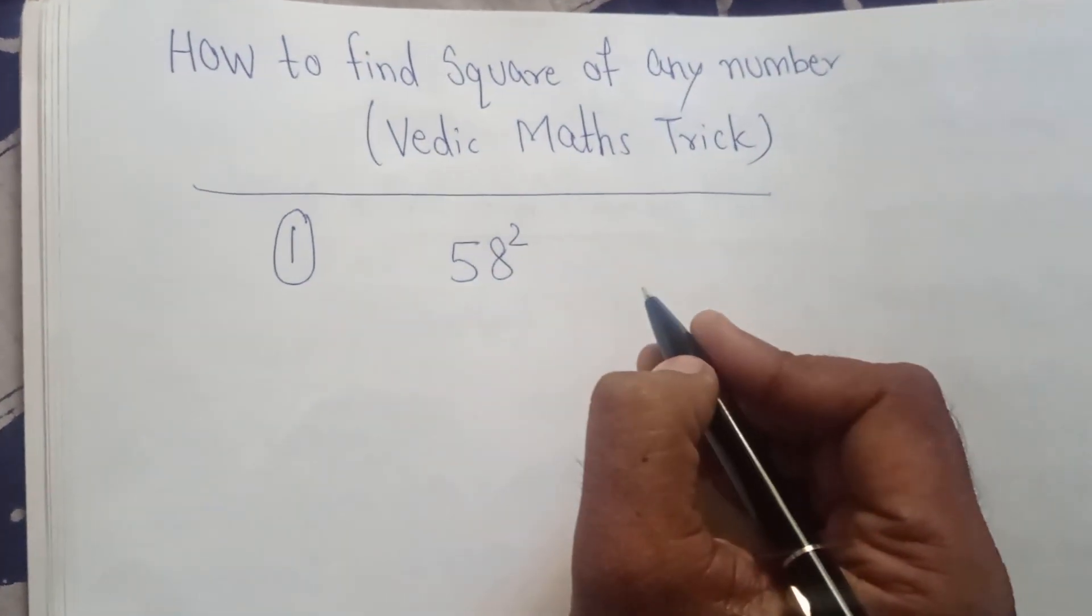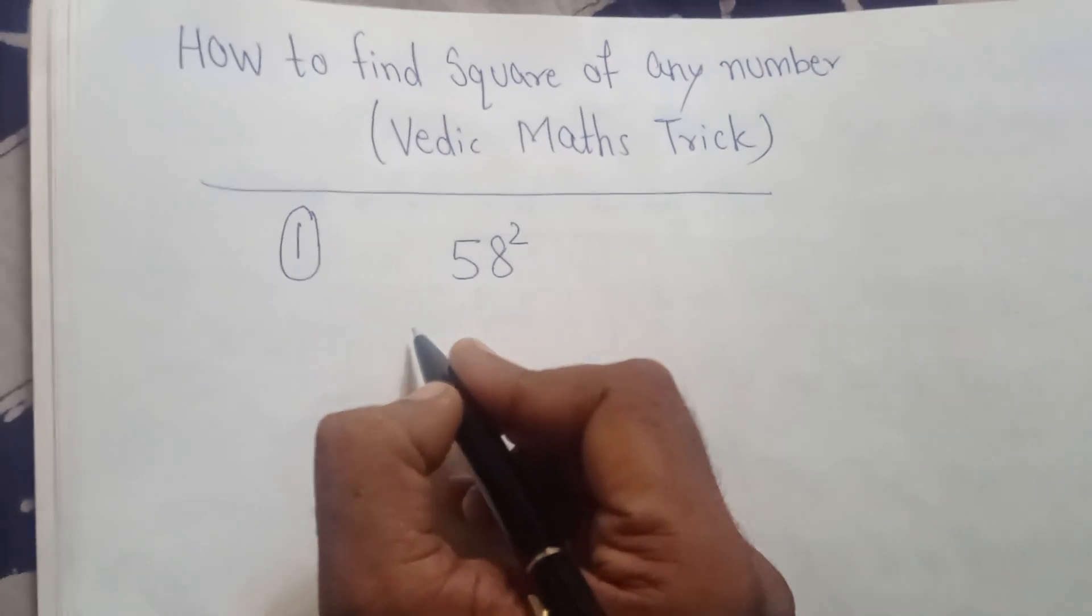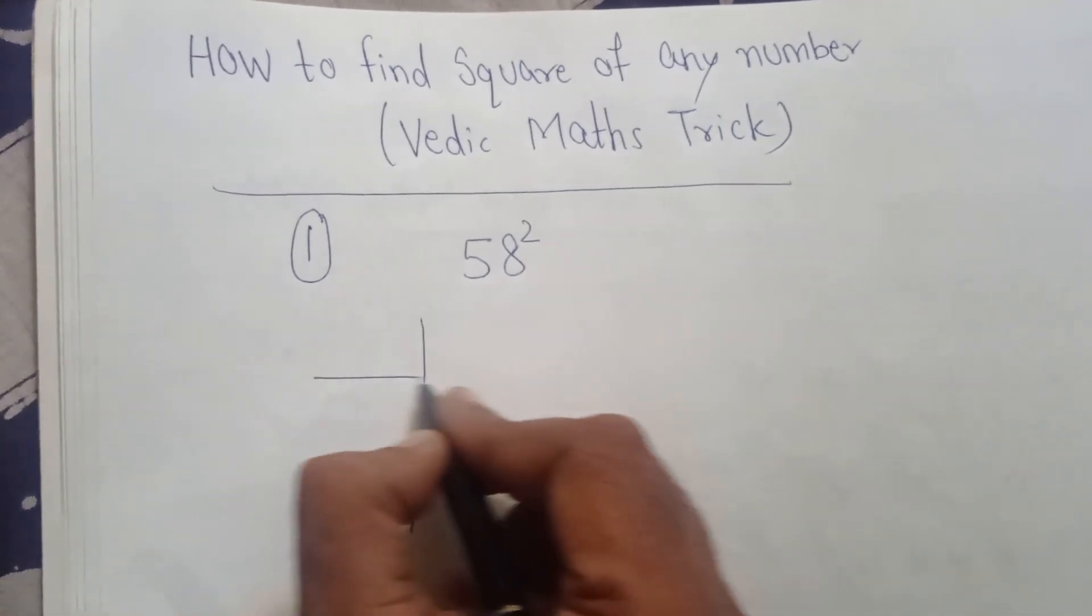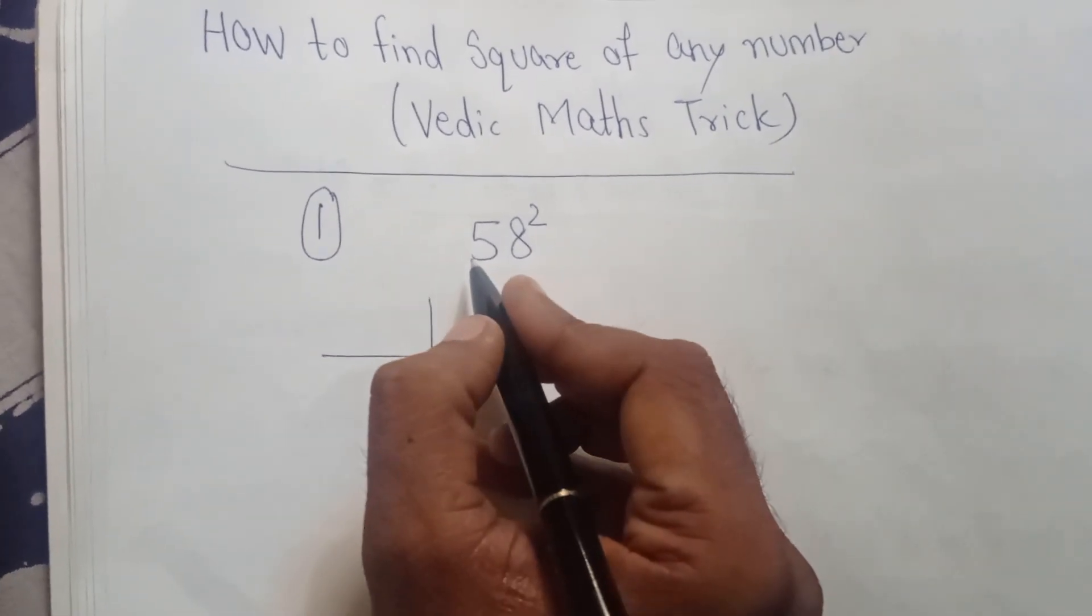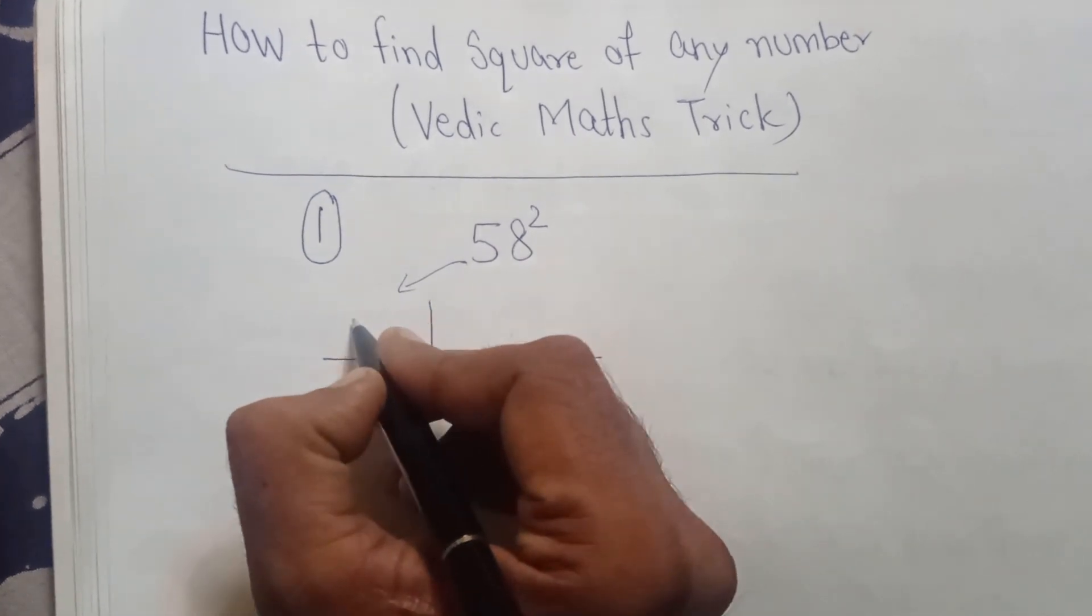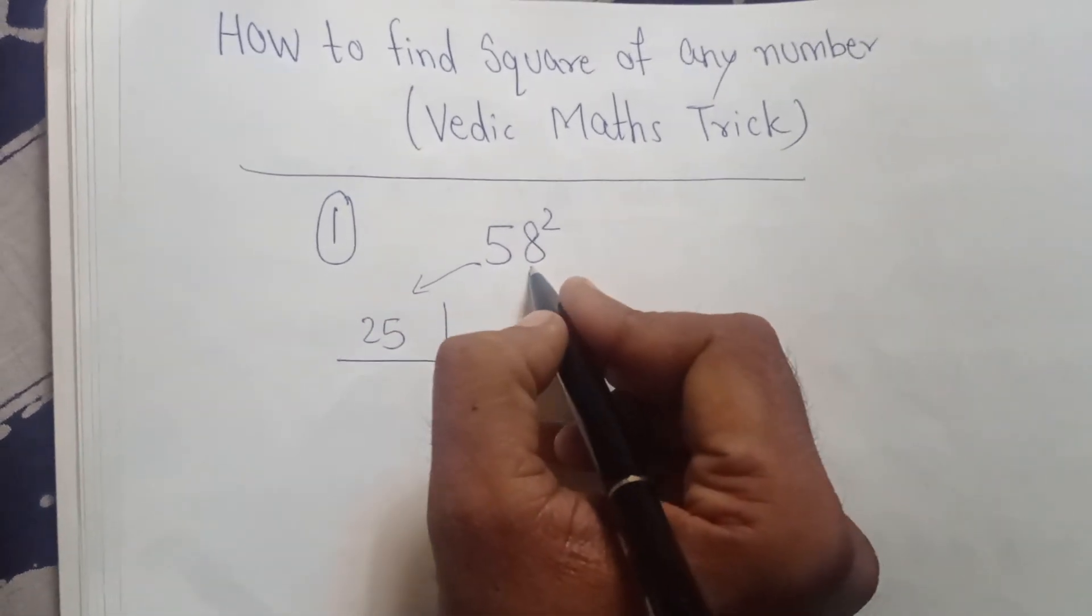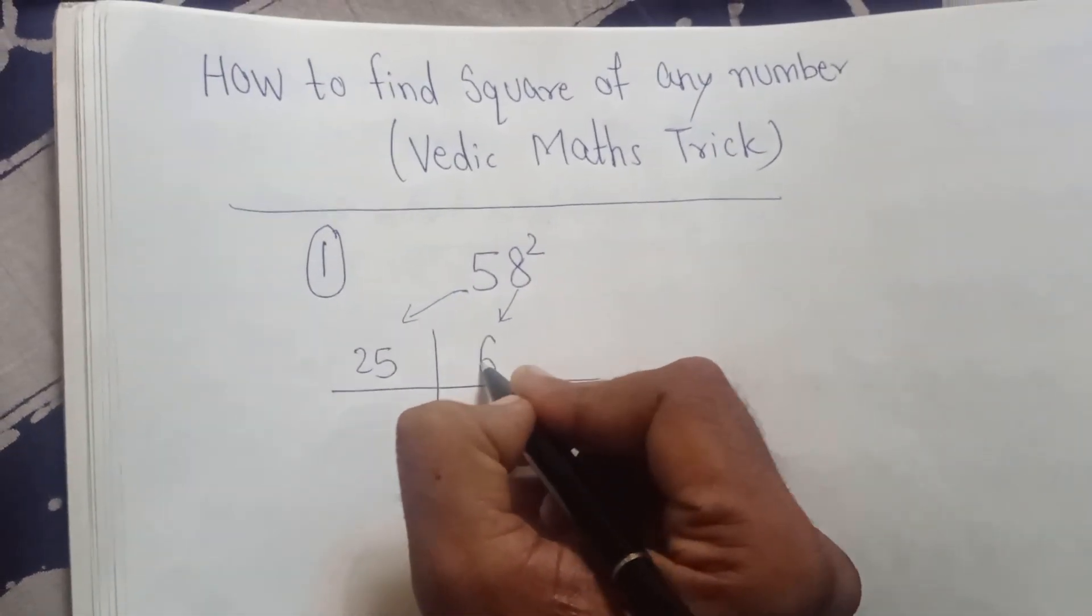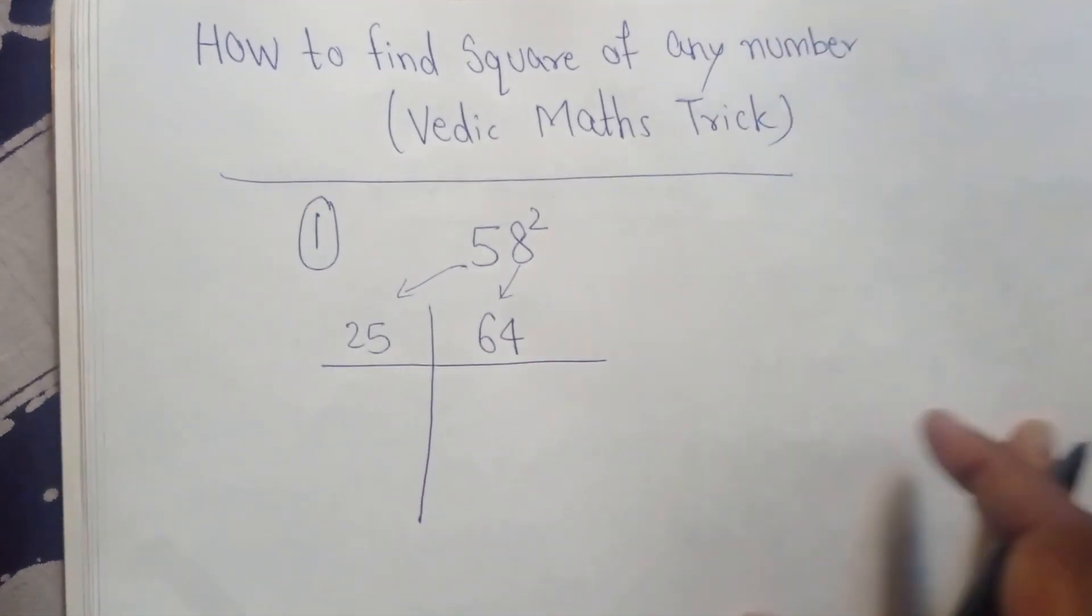I have to find the square of this number. We have to make it like this: square of 5 will be written here, 5² is 25, and square of 8 will be written here, it is 64.